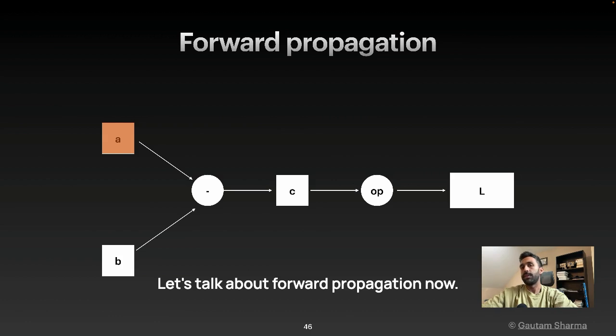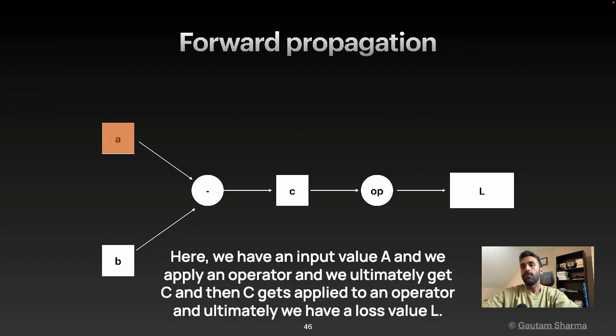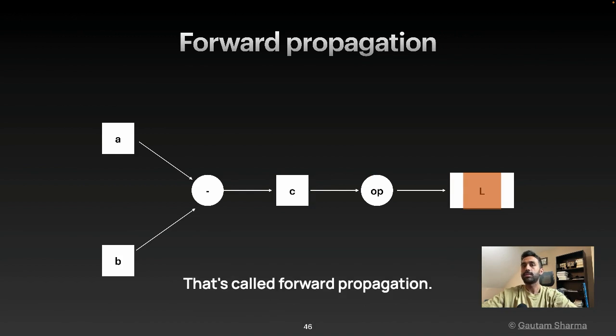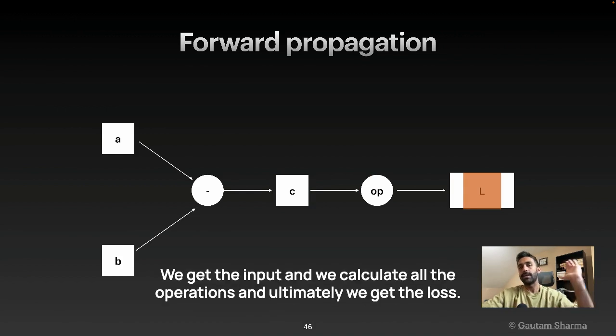Let's talk about forward propagation. Here, we have an input value A. And we apply an operator and we ultimately get C. And then C gets applied to an operator and ultimately we have a loss value L. That's called forward propagation. We get the input and we calculate all the operations and ultimately we get the loss.